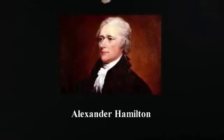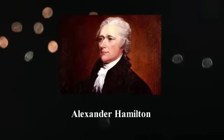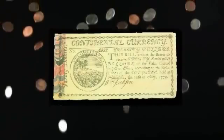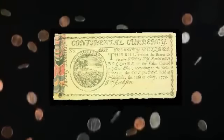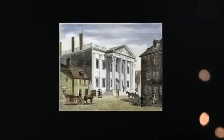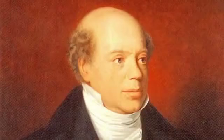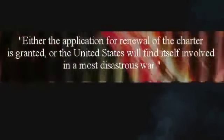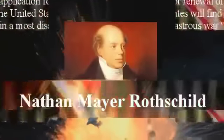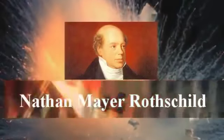The First Bank of the United States was founded in 1791, and by the end of its 20-year charter it had almost ruined the nation's economy while enriching the bank's owners. As a result, Congress refused to renew the charter and signaled their intention to go back to a state-issued value-based currency on which the people paid no interest at all to any banker. This resulted in a threat from Nathan Mayer Rothschild against the U.S. government: 'Either the application for renewal of the charter is granted, or the United States will find itself involved in a most disastrous war.'